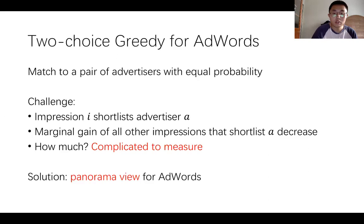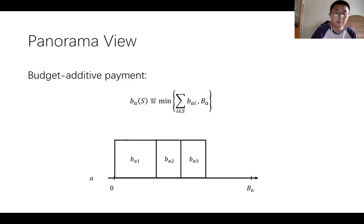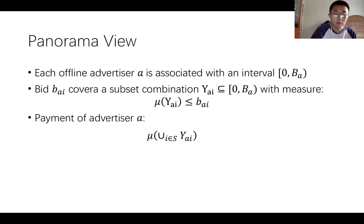Our solution is to use a novel formulation for AdWords which we call the panorama view. Recall that the budget-additive payment in the original formulation is either the sum of its bids for assigned impressions or its budget, whichever is smaller. In our panorama view, each offline advertiser is associated with an interval whose length equals the budget, and the algorithm not only assigns each impression to an advertiser but further assigns a subset combination of the interval with total measure at most its bid.